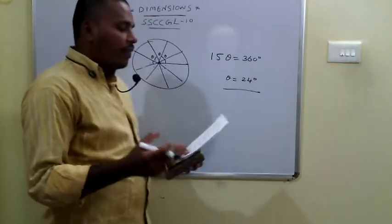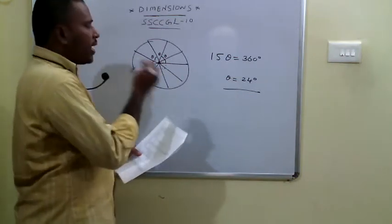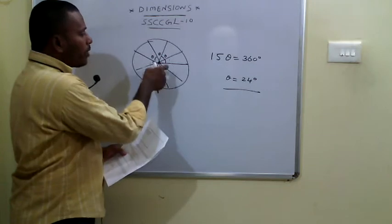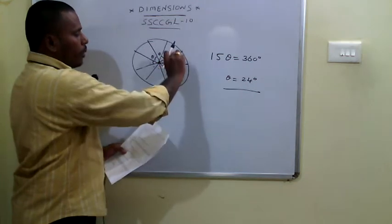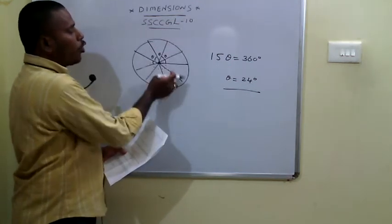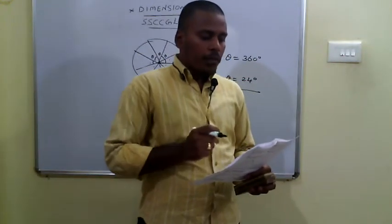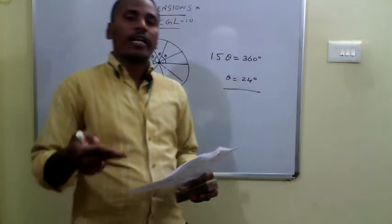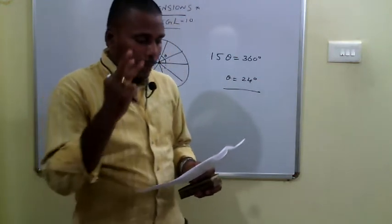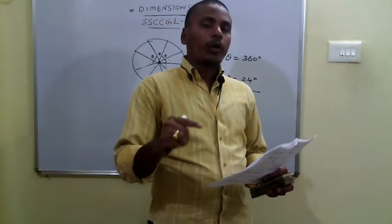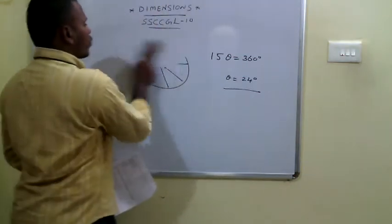Since each angle between adjacent spokes is 24°, the angle between any two spokes is a multiple of 24. Checking the options: 'along a diameter' means 180° — not a multiple of 24, so incorrect. The option 'inclined at 120°' — since 120 is a multiple of 24, the answer is option C.